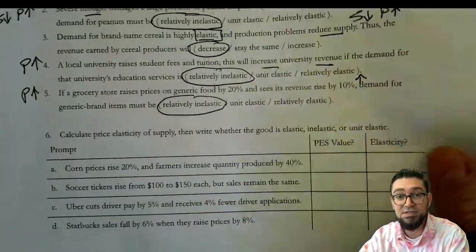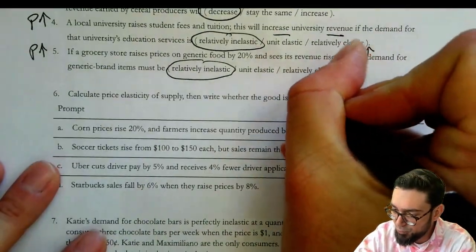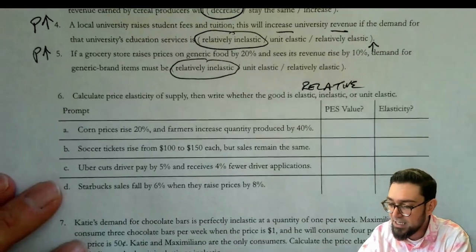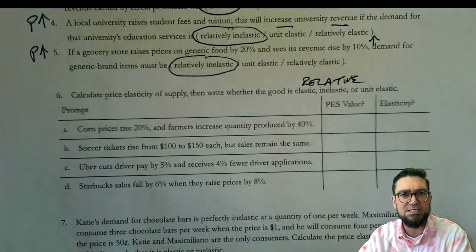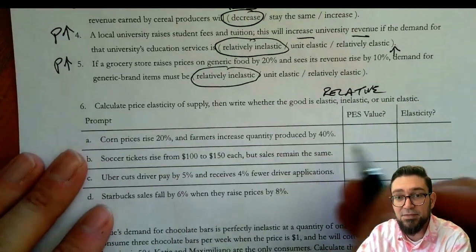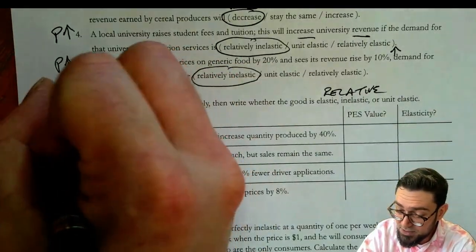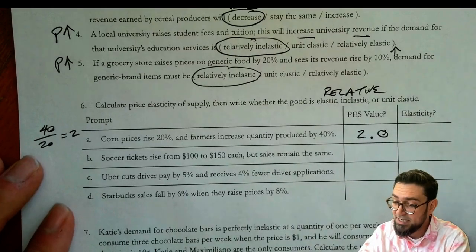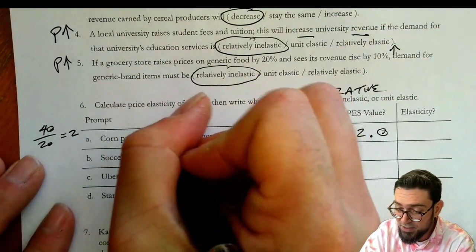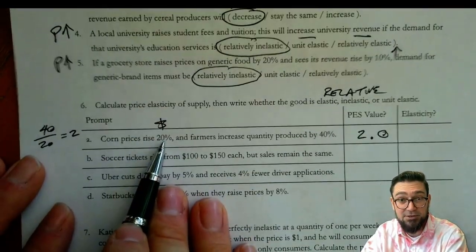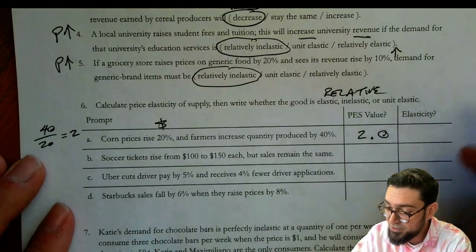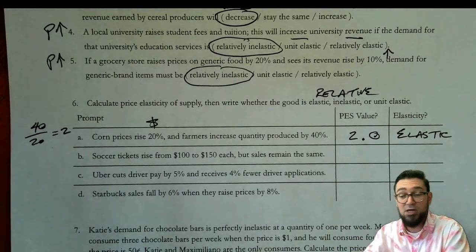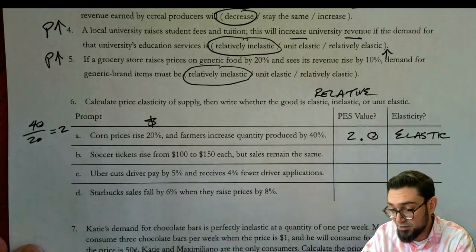Number six: calculate the price elasticity of supply, then indicate whether it's elastic or inelastic. These are going to be relatively elastic or relatively inelastic, though we might see one that's perfect. Part A: corn prices rise 20% and the quantity produced goes up 40%. So it's 40 over 20, which equals 2.0. I always put the price amount in the denominator, so the 20 goes on the bottom. If it's greater than one, then it's relatively elastic — and in this case it's relatively elastic supply because it's 2.